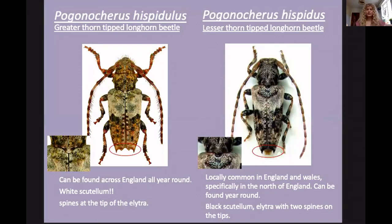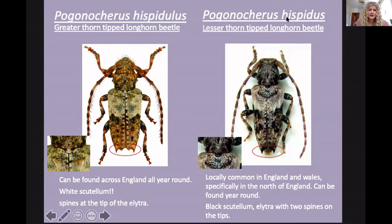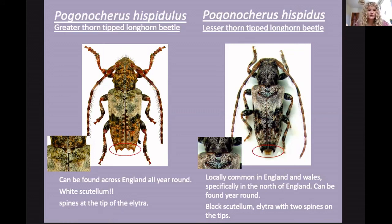Pogonocherus — tiny little Longhorns. We have two species: Pogonocherus hispidulus and Pogonocherus hispidus. Hispidulus has a white scutellum, whereas hispidus has a black scutellum. You can also count the spines on the tips of the elytra: hispidulus has four spines, hispidus has just two. Really easy to separate, but they are very small.